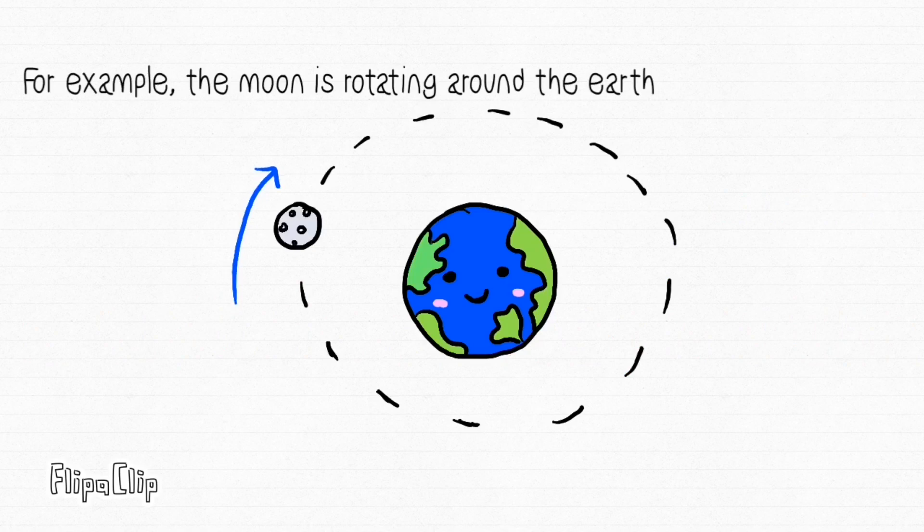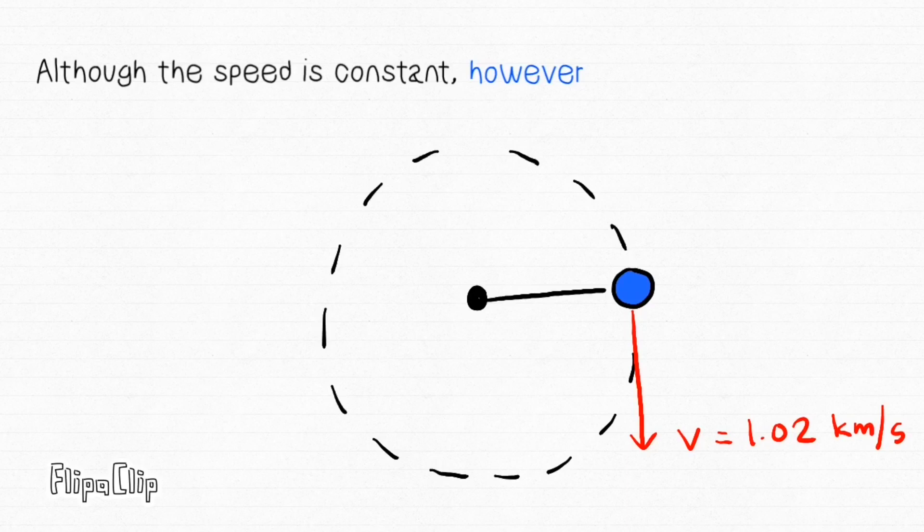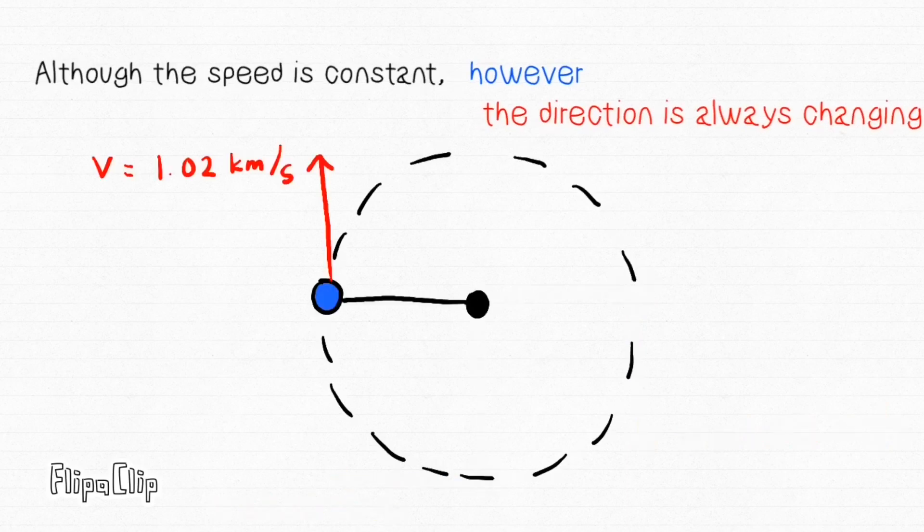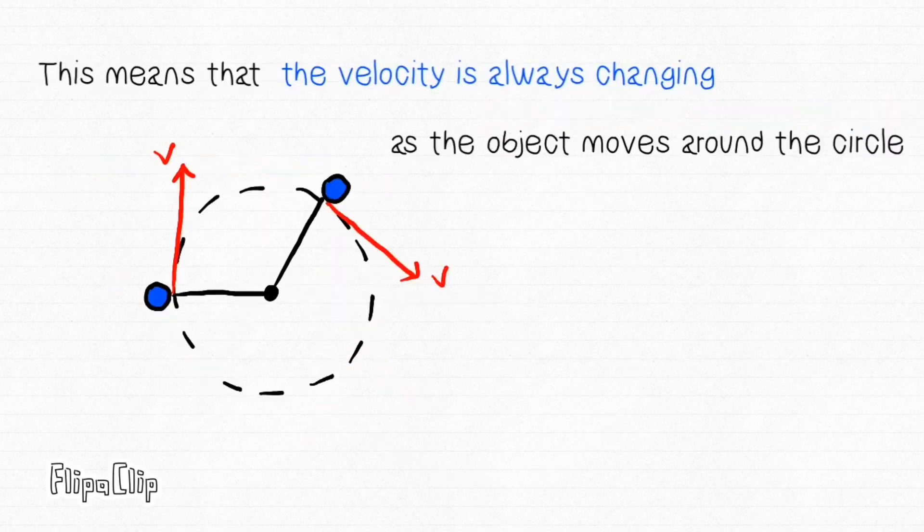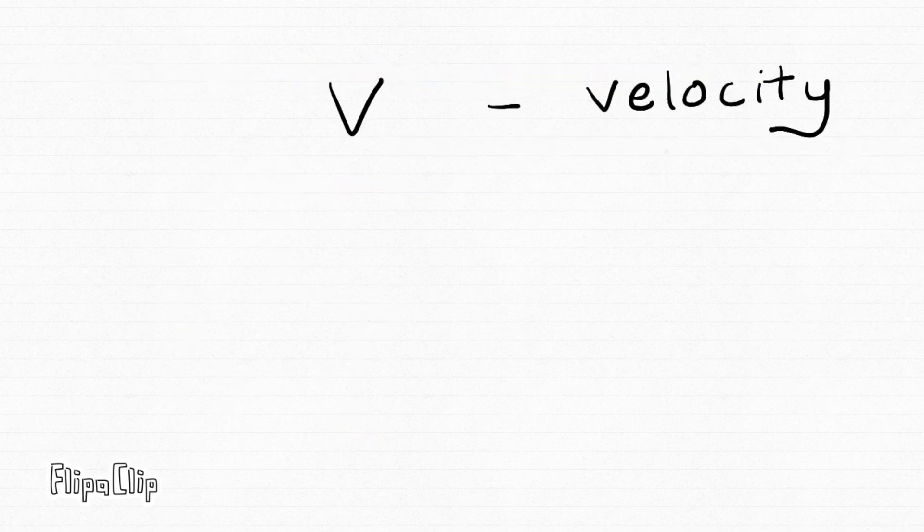For example, the moon is rotating around the Earth at a constant speed. Although the speed is constant, the direction is always changing. This means that the velocity is always changing as the object moves around the circle. As velocity changes over time,